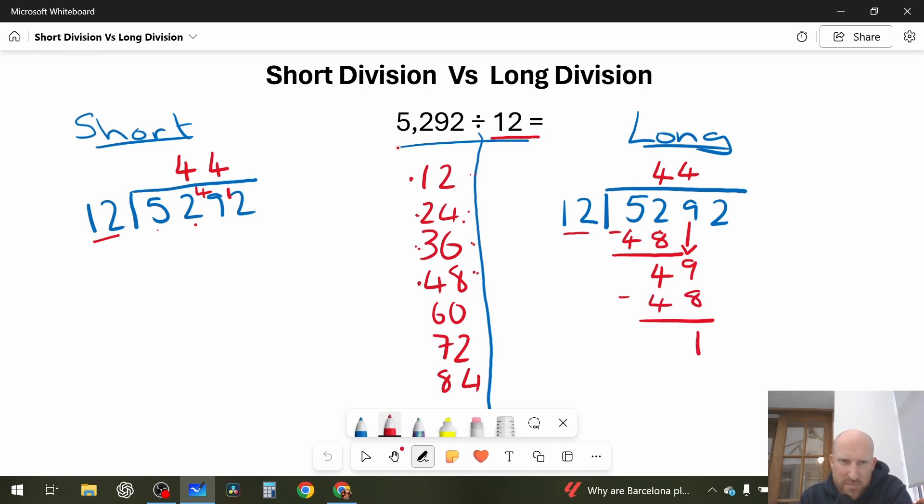So, 12 is already made up there in short division, but for long division, I have to bring the 2 down to make it 12. So, 12, and then the final calculation is how many 12s in 12, that's 1, how many 12s in 12, 1.